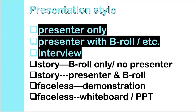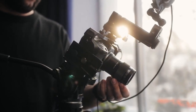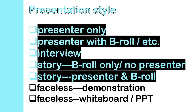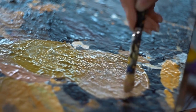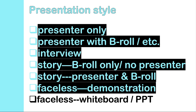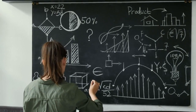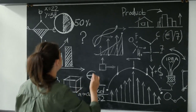The third type is an interview — similar to a podcast where you watch two people having a conversation about a topic. Then we have story-based videos: one type features only B-roll with no presenter visible, and the opposite type combines the presenter with B-roll punctuated inside the story to add variety. The last type is faceless videos, where you don't see the presenter at all. This is common in videos of people doing things with their hands — arts and crafts, cooking, or unboxing gadgets — or videos focused on a whiteboard or PowerPoint, often designed to teach school subjects.